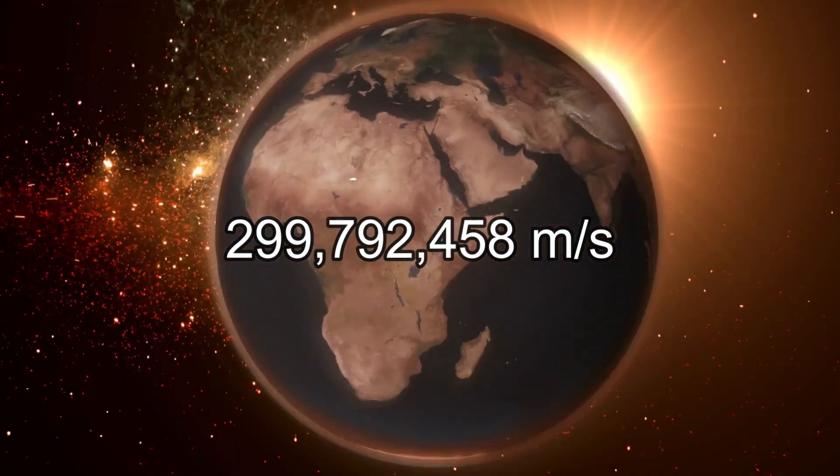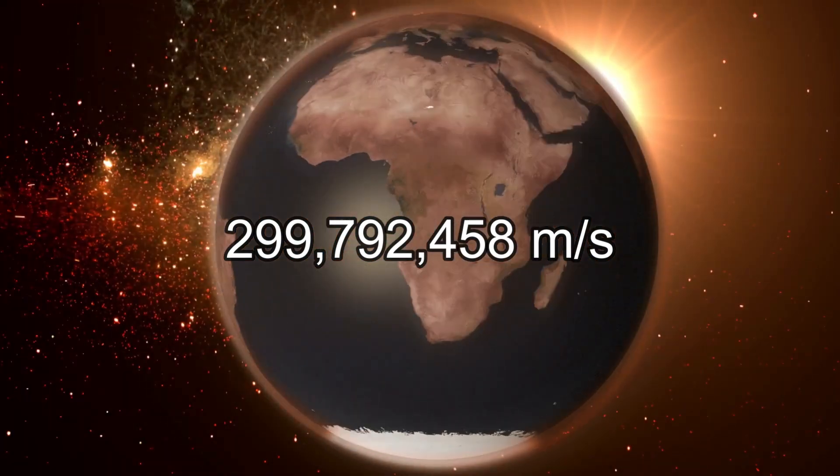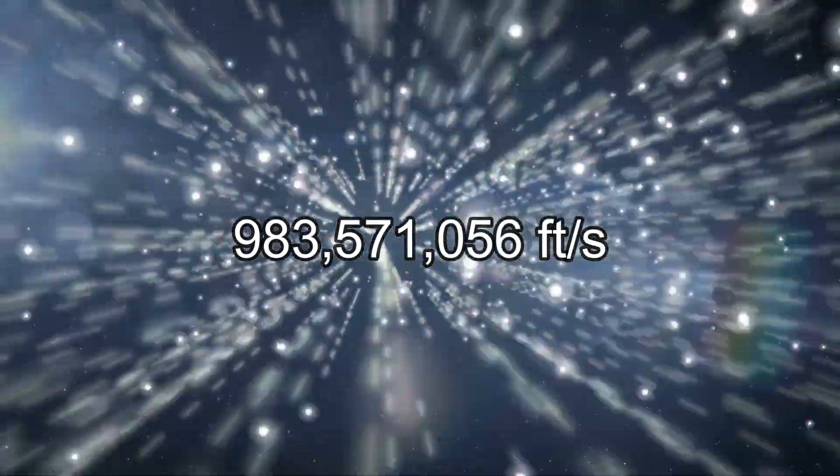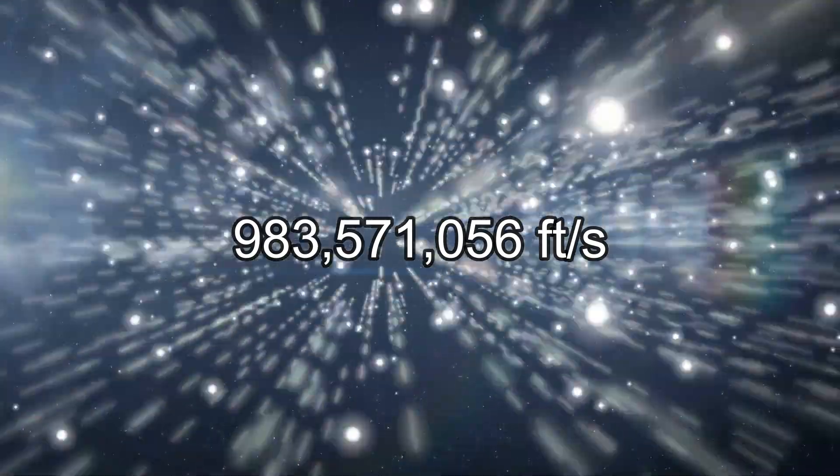In fact, other measurements are based on how fast it is moving. But how quickly does it travel? In a vacuum, light moves at a precise speed of 299,792,458 meters per second, which is equal to 983,571,056 feet per second. Accordingly, light can go around 186,282 miles in a single second.